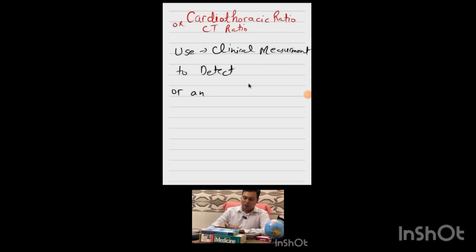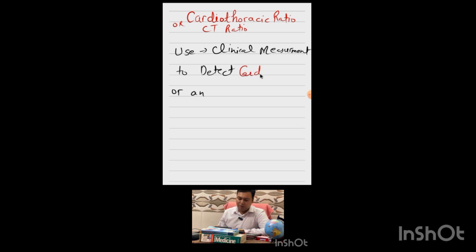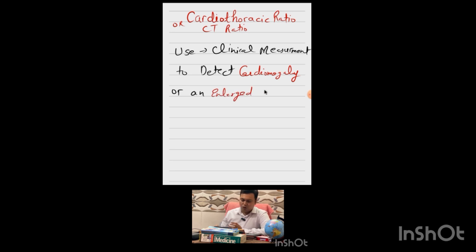Our topic is cardiothoracic ratio. Cardiothoracic ratio, or CT ratio, is a clinical measurement used to detect cardiomegaly — that is, an enlarged heart. We use the CT ratio to differentiate between a normal heart and an enlarged heart.